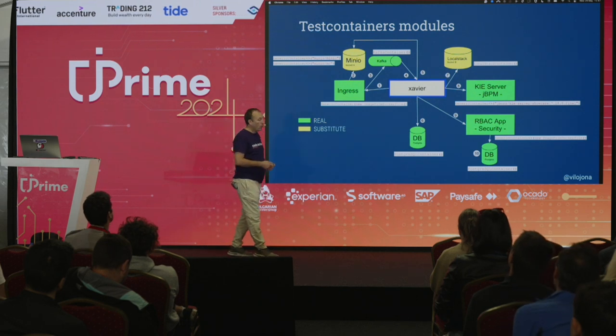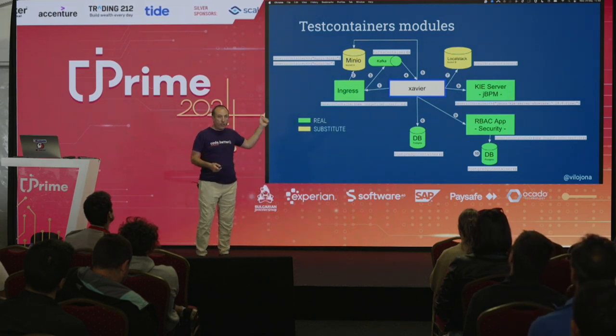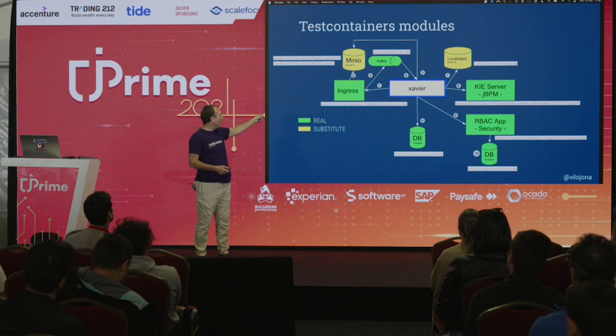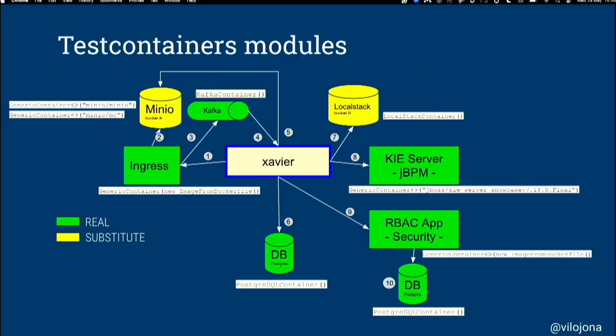For the real containers: image from Dockerfile for the Ingress, and a generic container with the key server image for Kie. For RBAC, again a generic container with an image. For PostgreSQL we had the out-of-the-box container. For Kafka and LocalStack, out-of-the-box containers. For Minio, we pulled an image from Docker Hub. These are the different ways of defining the containers we were using.